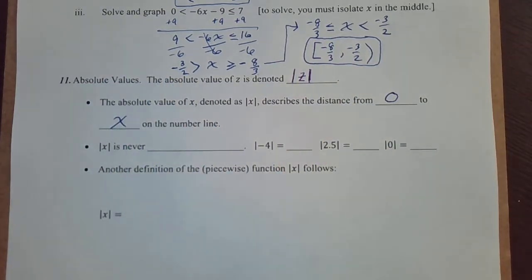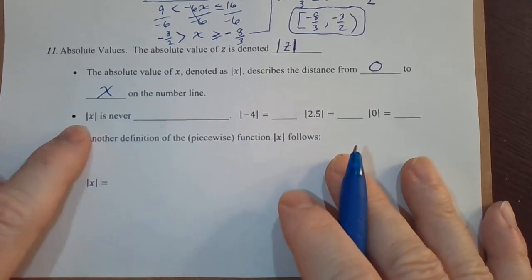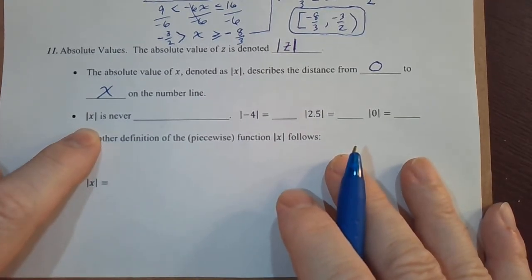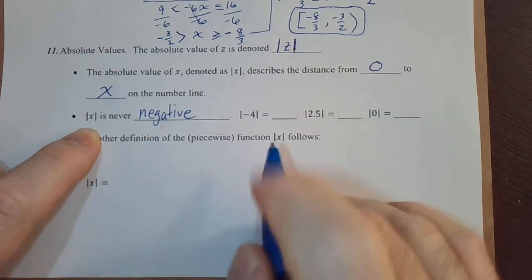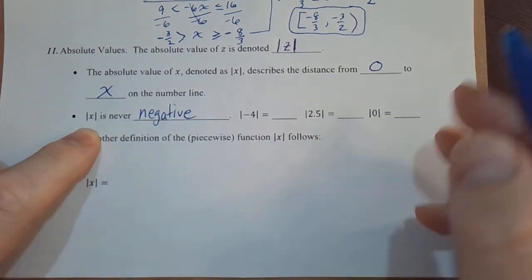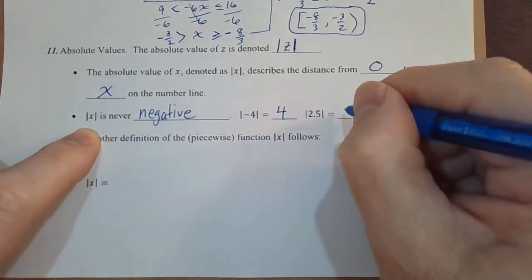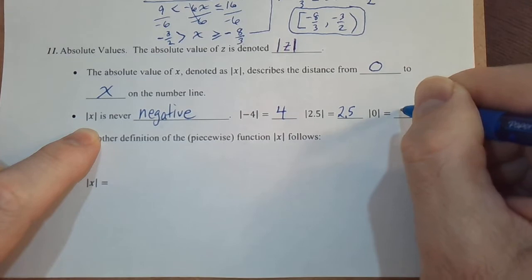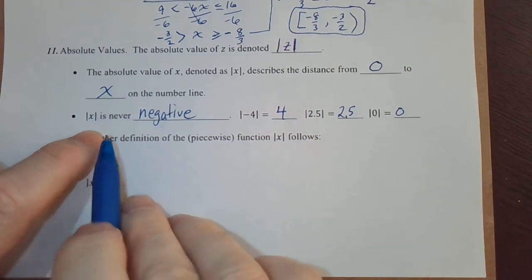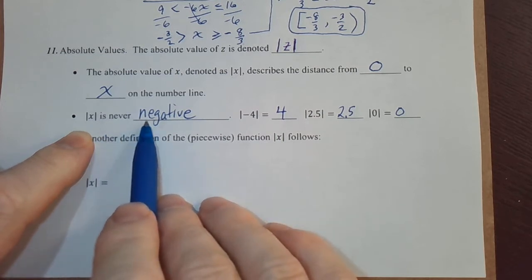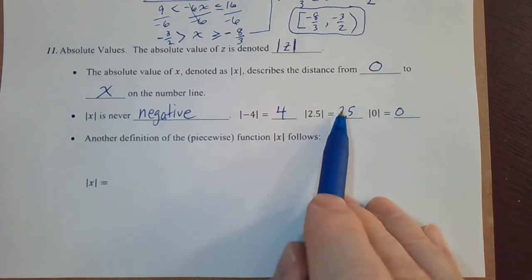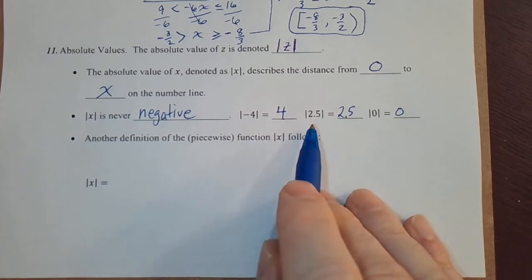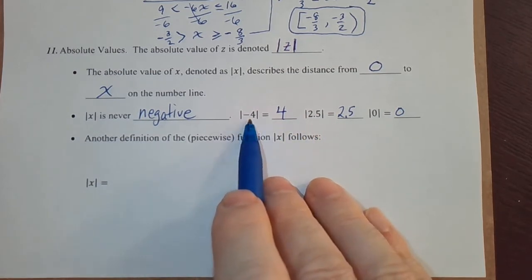No matter if you're measuring going from left to right, right to left, we think of distance as being positive. So therefore, the absolute value of x is never negative. And just simple review questions here. The absolute value of negative 4? 4. Absolute value of 2.5? 2.5. Absolute value of 0 is 0. Note that I could not say the absolute value of x is always positive, it's not because of 0. 0 is neither positive nor negative.